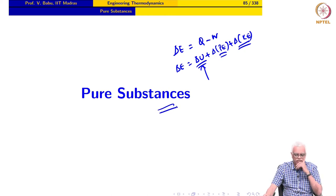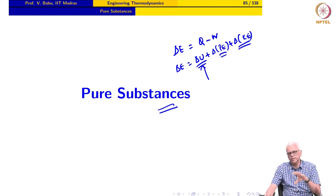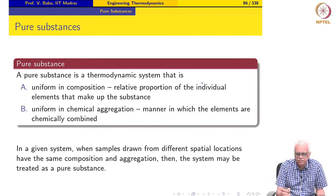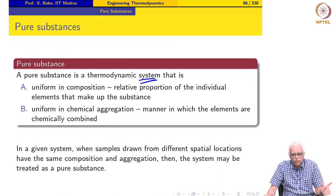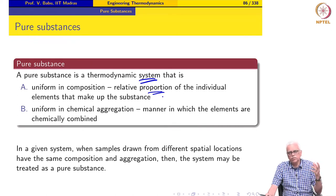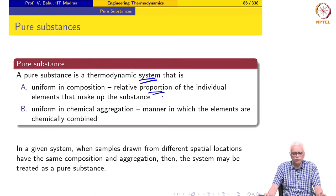That framework is provided by the notion of pure substances. We have to say certain things about the material or matter inside the system so that we can calculate the internal energy and change in internal energy. The definition of a pure substance goes like this: a pure substance is a thermodynamic system that is uniform in composition. By composition, we mean the relative proportion of the individual elements that make up the substance — so many atoms of carbon, so many atoms of hydrogen, so many atoms of oxygen, and so on. That relative proportion should be uniform everywhere in the system.